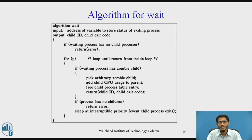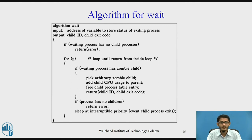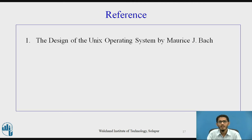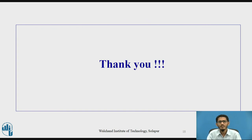If the process executing wait has child processes but none of them are zombie, it sleeps at an interruptible priority until the arrival of a signal. The kernel does not contain an explicit wake-up call for a process sleeping in wait — such processes only wake up on receiving signals. For any signal except death-of-child, the process will react as described. However, if the signal is death-of-child, the process may respond in a different manner. Thank you.